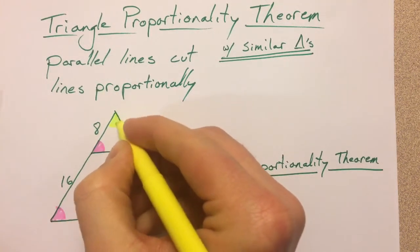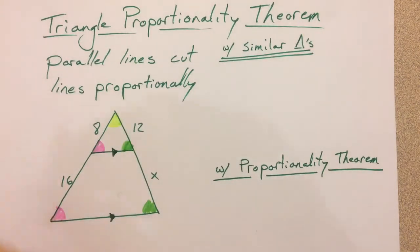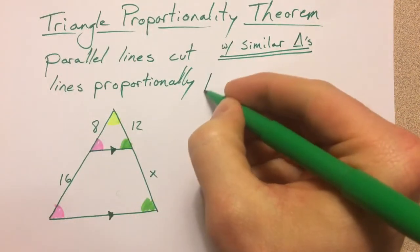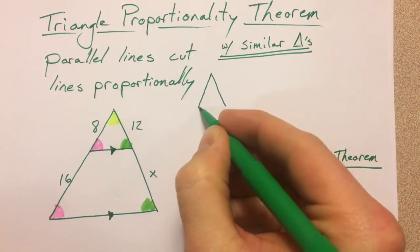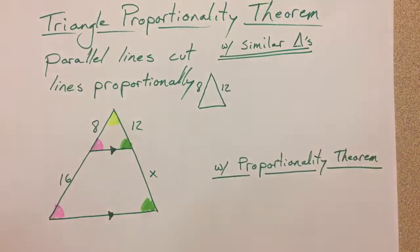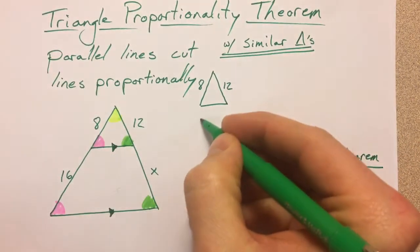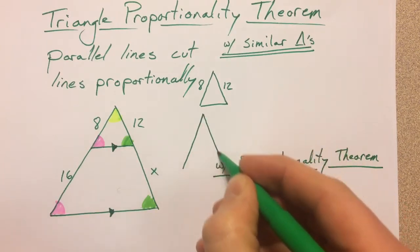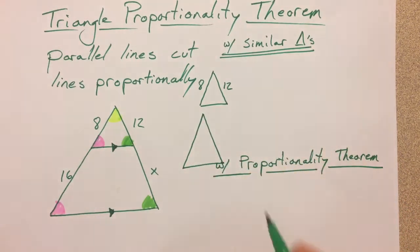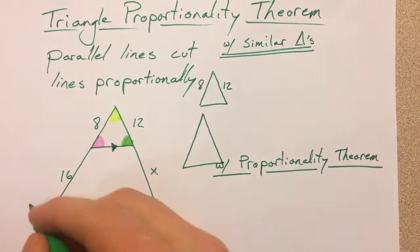So what I'm talking about with two triangles is I've got the small one that is 8 and 12, and then I've got the bigger one which we're comparing it to.